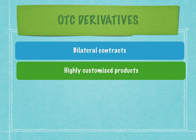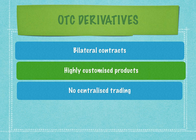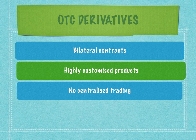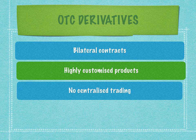OTC derivatives are extremely customized products. Because of this customization, it is not possible to have standardized or centralized trading. This customization results in multiple entities wanting to trade on those products, since high risk anticipates high return. Highly customized products result in a structure that can only be contractually reversed after a point of time. Since there is no centralized trading, price discovery is the biggest challenge in OTC derivatives.